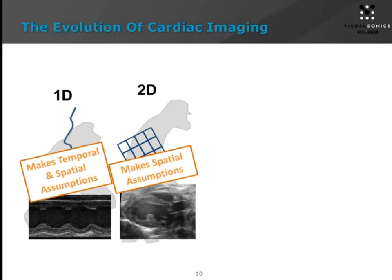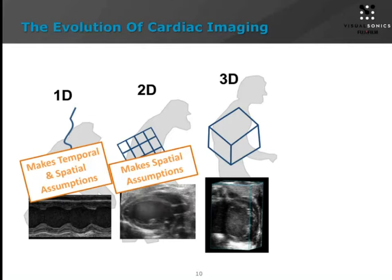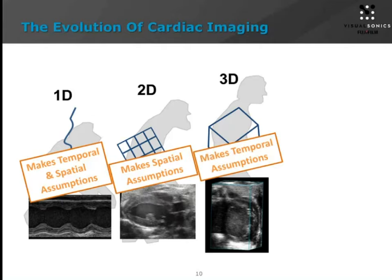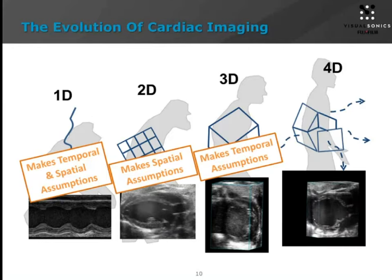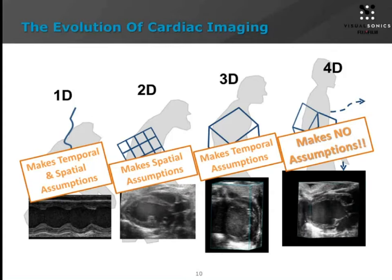To get away from those spatial assumptions, there's a nice transition into 3D imaging, which has been around for some time on the clinical side. We've had the ability to do gated and triggered 3D acquisitions of the heart, or pretty well any area of small animals, in 3D for a long time. But these images are static, so you're making a temporal assumption by only looking at a static image. Now with 4D we have the ability to look at both the spatial and temporal dimensions together — no assumptions. We now have a complete view of the heart in X, Y, and Z dimensions in space plus the time dimension.